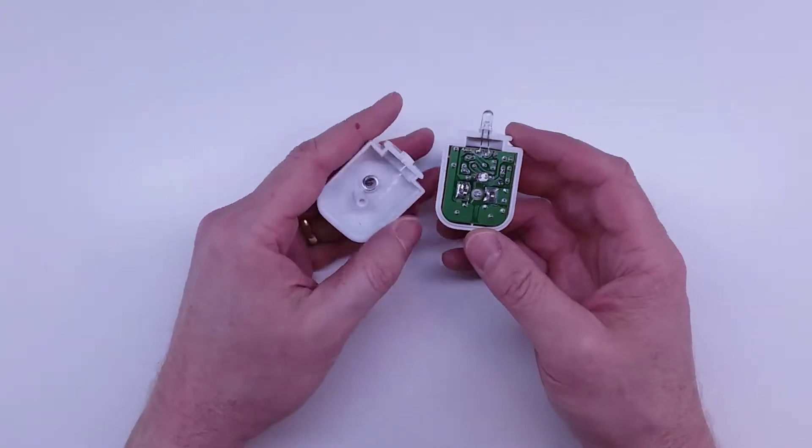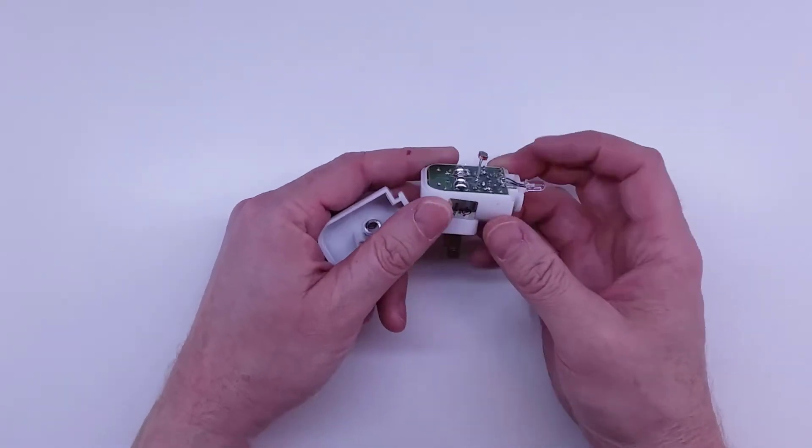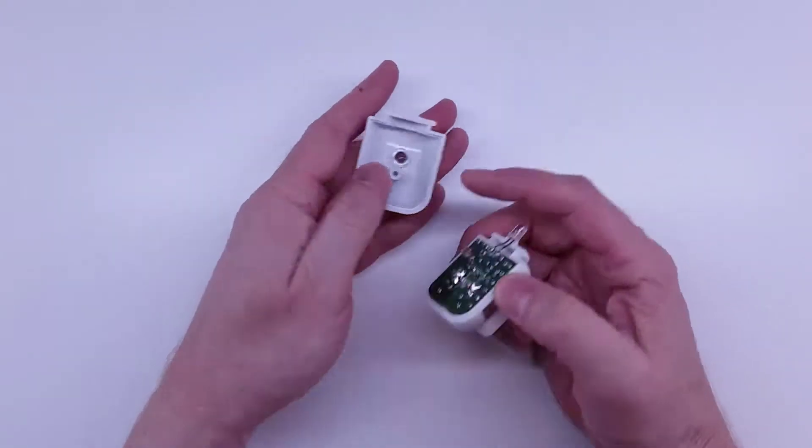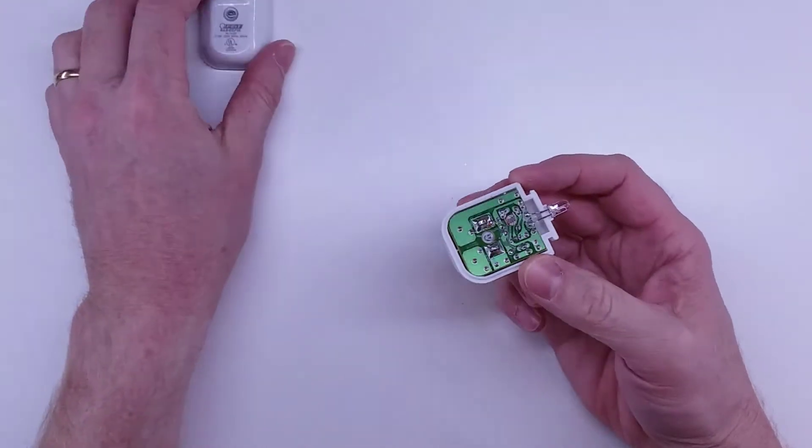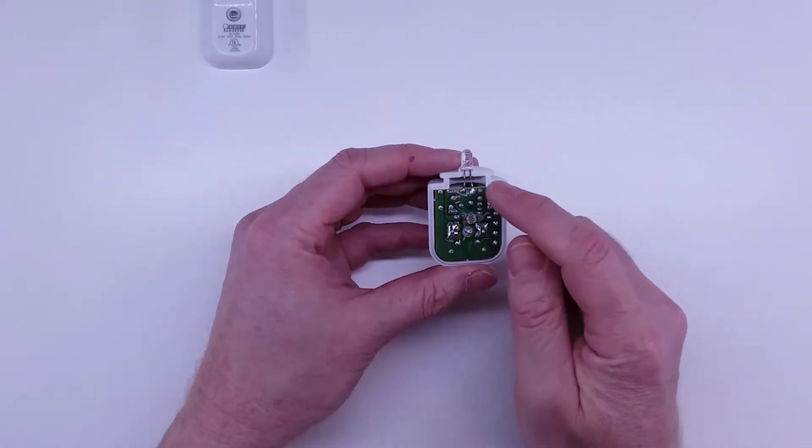You can see the photo resistor on the top here which goes through its little lens right here on the front, and then you can see the LED on the very top.